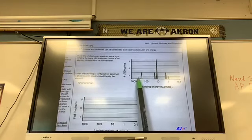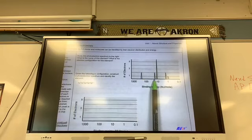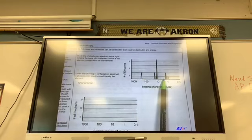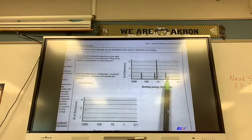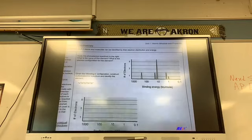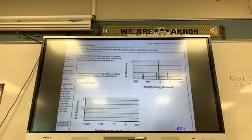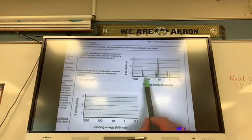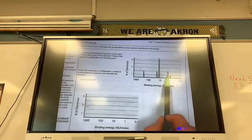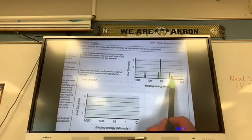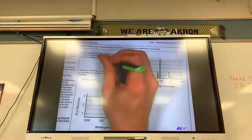Study the photoelectron spectrum to the right. What's the name of this element? 1s2, 2s2, 2p6, 3s2, 3p1. This has to be aluminum. Wait a second. Yes. 1s2, 2s2, 2p6, 3s2, 3p1. Aluminum. That's aluminum.